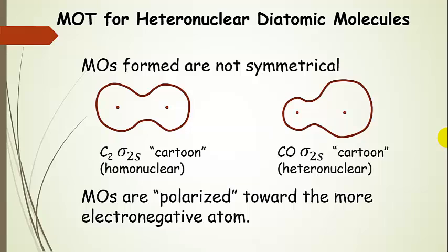Now, one thing that comes in when we talk about heteronuclear diatomic molecules is that the molecular orbitals formed are not symmetrical anymore. So, for instance, the carbon diatomic molecule, the sigma 2s, has that peanut shape. And remember, I'm not showing the radial node. And this is a homonuclear example.